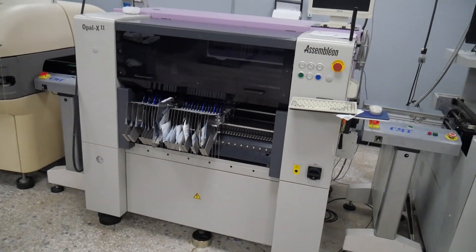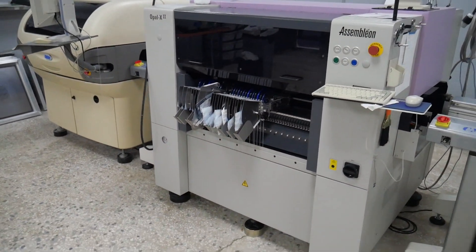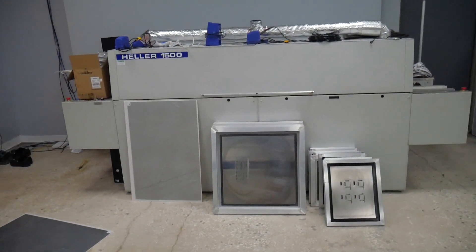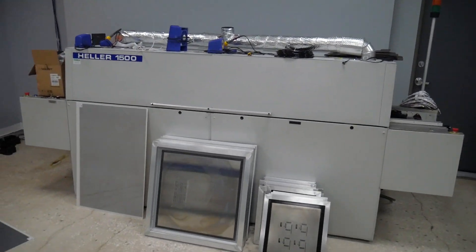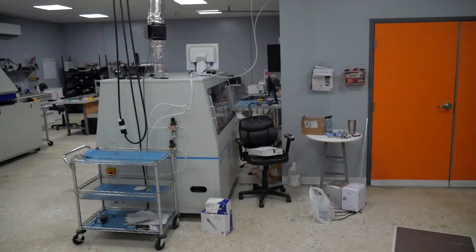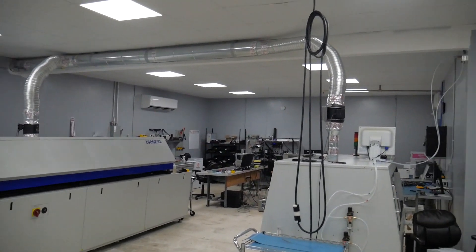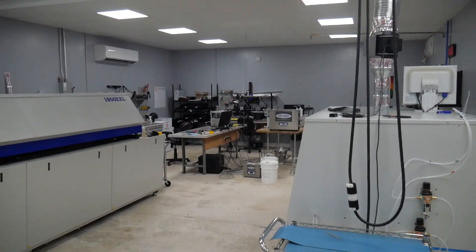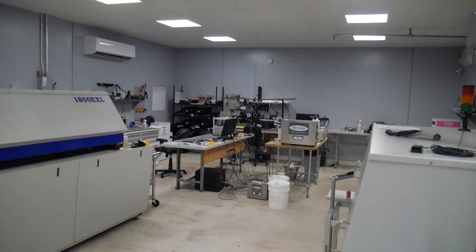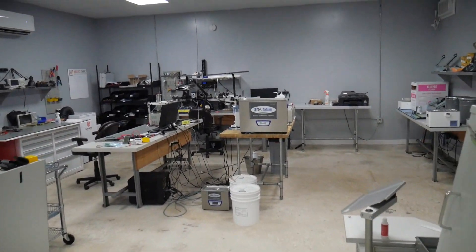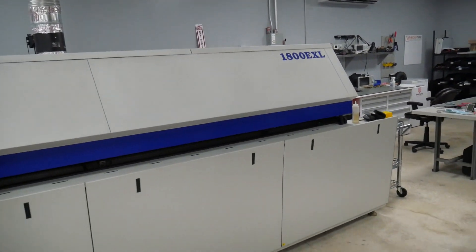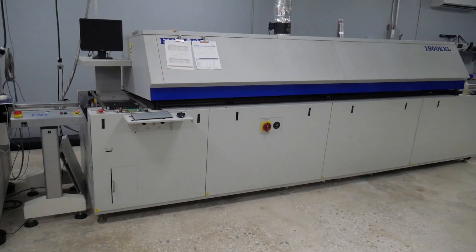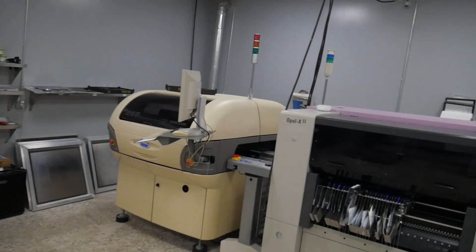So at the start when we first started doing assembly we had just a single printer, a Dek Horizon printer, a single eight-head pick and place, an Assembleon Opal, and then we had a five zone with one cooling zone oven. That was all thrown in over on that space over there where the stub wall is, and obviously that was just a tiny space and we kind of outgrew that pretty quickly.